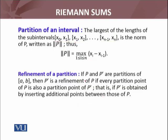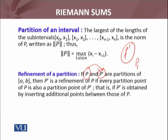Refinement of a partition: if P and P' — note this is not a derivative, it is another partition (you can call it P1 to avoid confusion) — if P and P1 are partitions of [A, B], then P' is a refinement of P if every point of P is also in P'. That is, P' is obtained by inserting additional points into P. So a refinement means we take P, insert additional points, and obtain another partition — that is called a refinement of P.